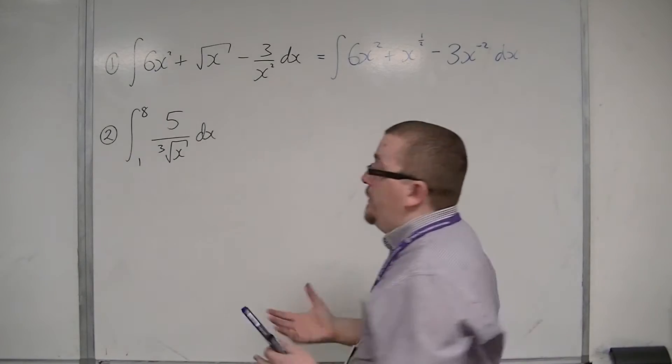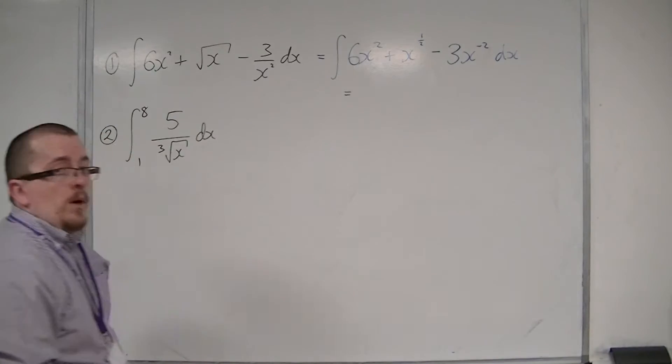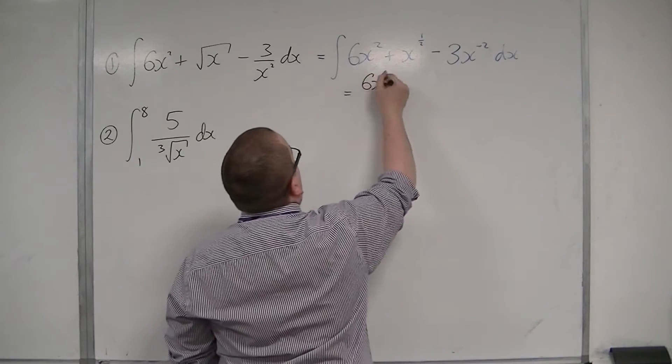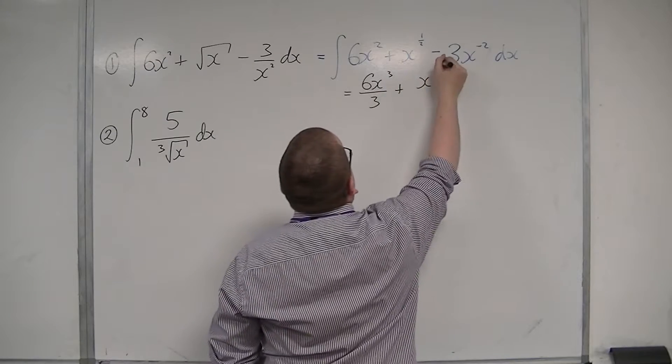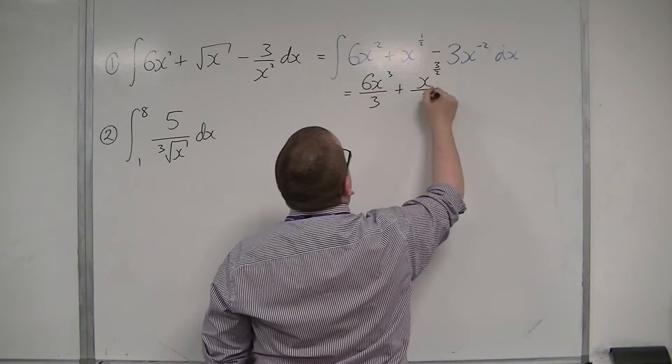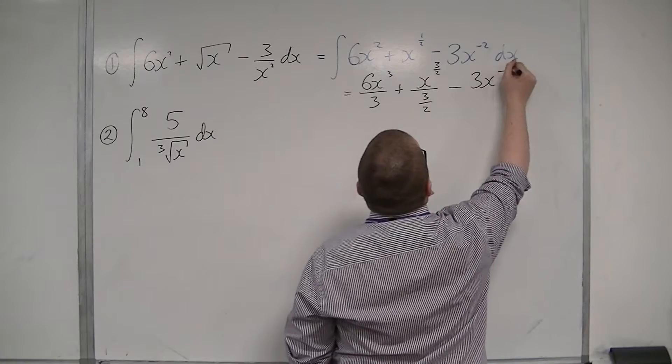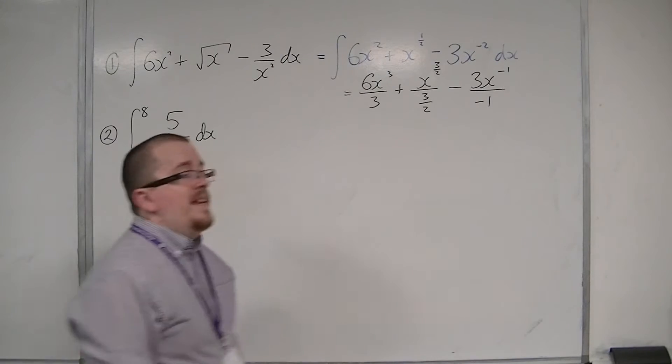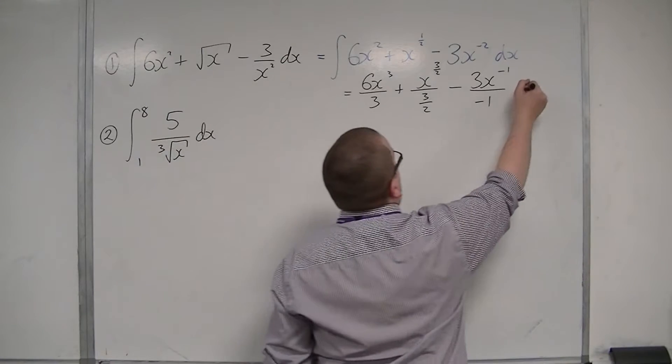I'm now ready to integrate. Add 1 to the power and divide by the new power. So 6x cubed divided by 3, plus x to the power of 3 halves divided by 3 halves, take away 3x to the power of minus 1 divided by minus 1. And because it's an indefinite integral, I must add on a constant of integration, so plus c.